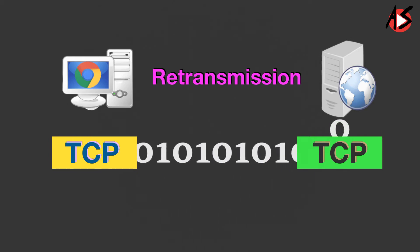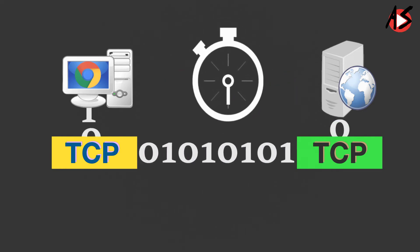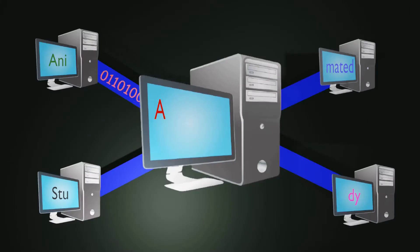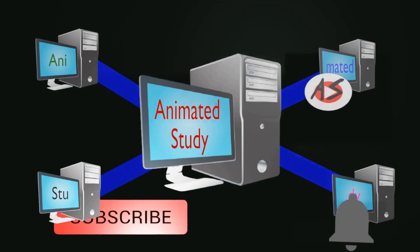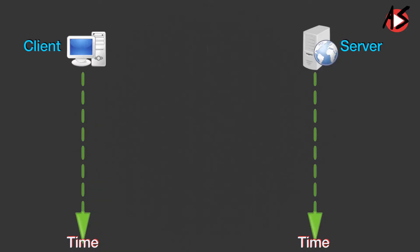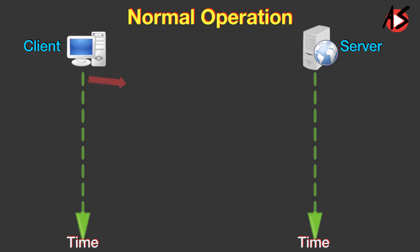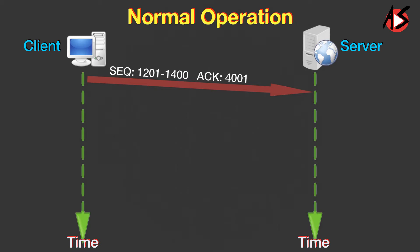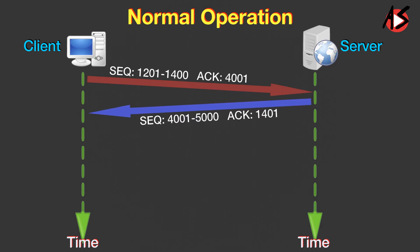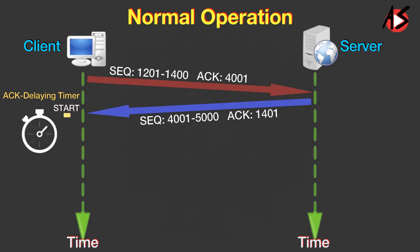Let's understand how TCP manages retransmission using a retransmission timer. Normally, there is a bi-directional data transfer between two systems. Suppose the client TCP sends one segment and the server TCP sends three segments. The client sends a segment with sequence number 1,201 to 1,400 with acknowledgement number 4,001. The server sends a segment with sequence number 4,001 to 5,000 and acknowledgement number 1,401.